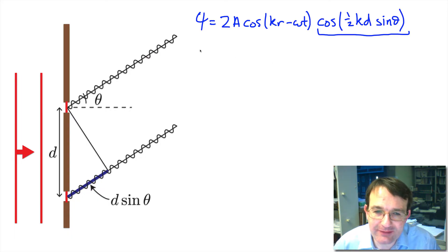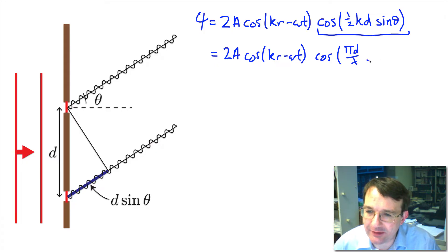If I expand this out further then I get 2a cosine kr minus omega t. Now I can write the k as 2 pi over lambda, so multiplied by a half I end up with pi d over lambda times the sine of theta. So my question is when I plot the amplitude psi versus sine theta, where am I going to get a maximum?